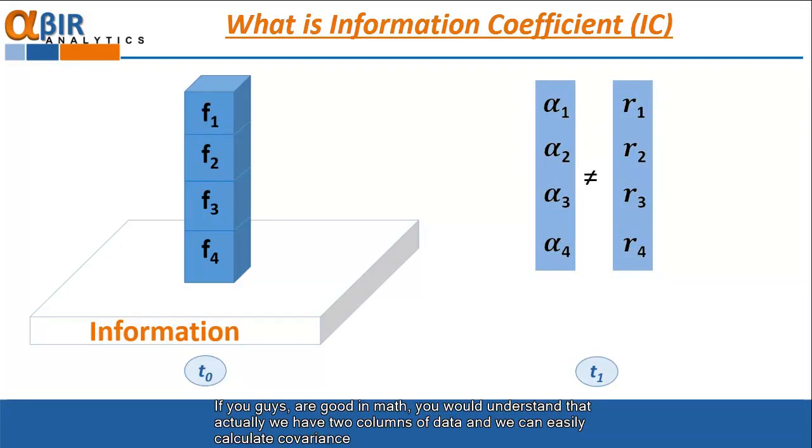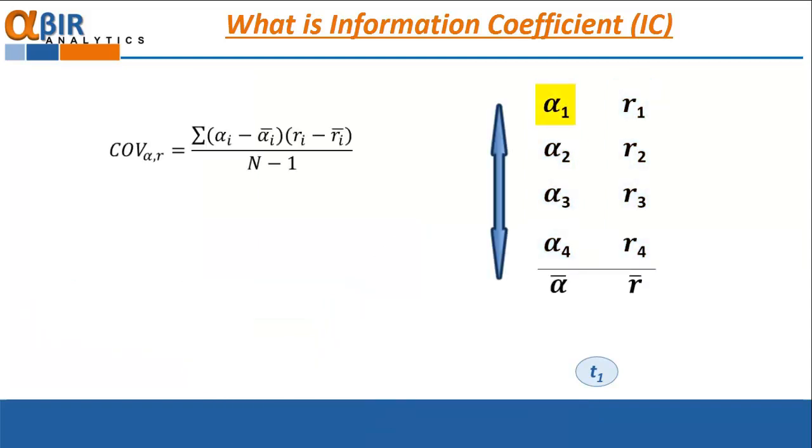If you guys are good in math, you would understand that actually we have two columns of data. And we can easily calculate covariance by this way. This minus average multiplied by this minus average plus this minus average multiplied by this minus average and so on. Divided n minus 1.